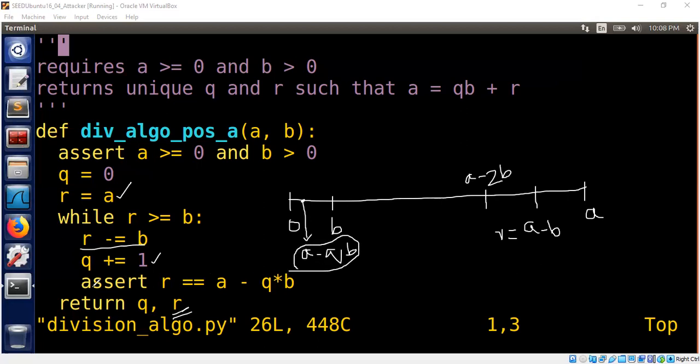The interesting thing is that I have put an assert statement, r is equal to a minus qb within the while loop, which is true. Every time the program runs, r must be equal to a minus qb. Every time the loop runs, this constraint must be satisfied. This is like a loop invariant. In program verification, people use loop invariants to prove correctness. But I am adding here to explain to you that this is true. So even if the loop has not yet terminated, this is always true.